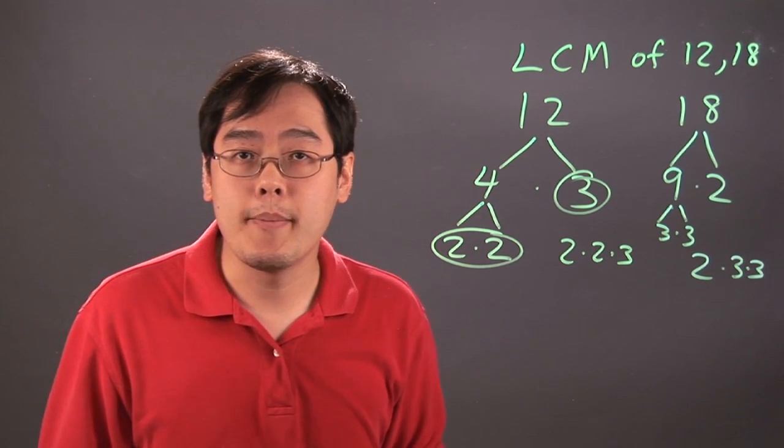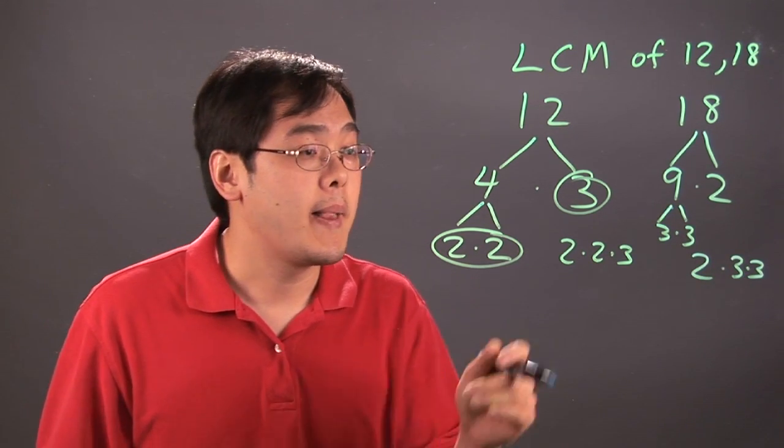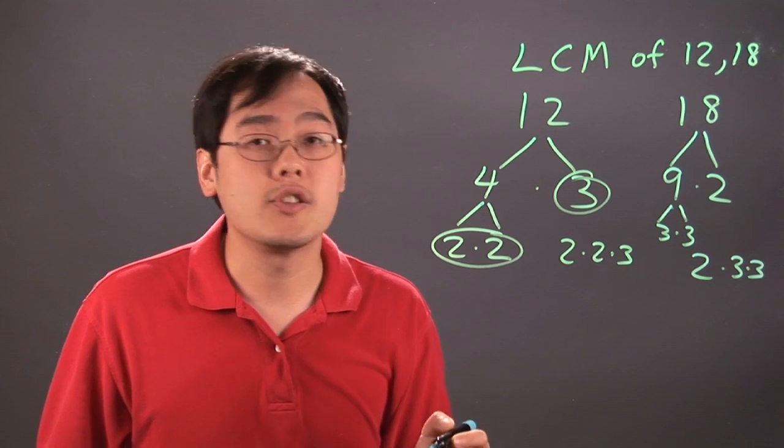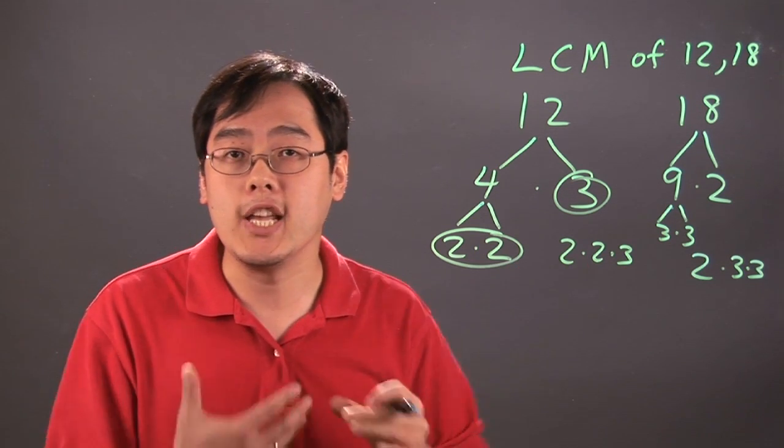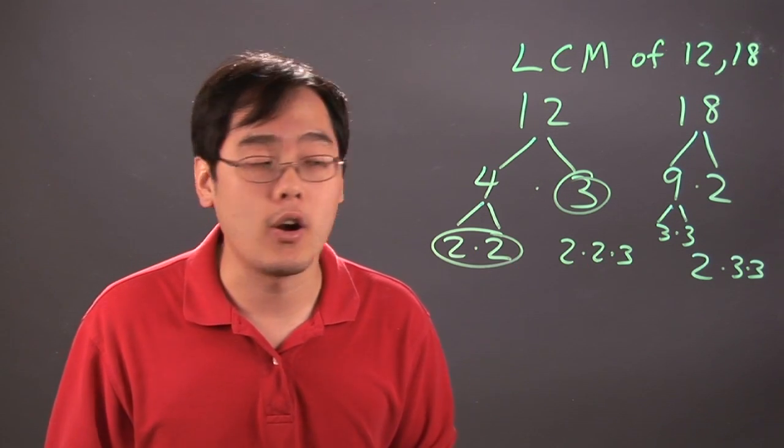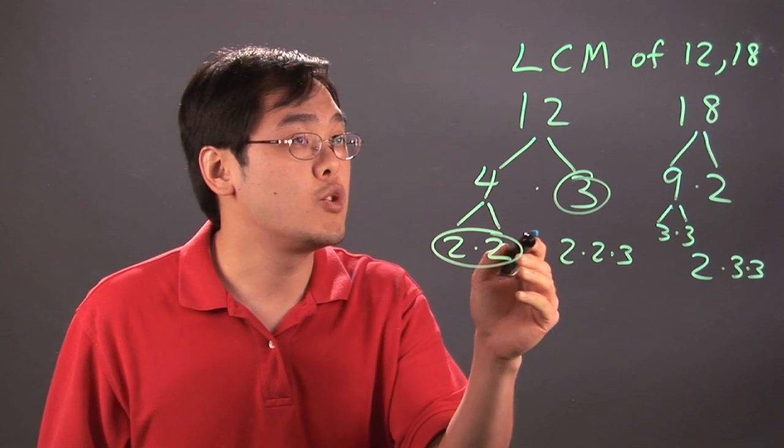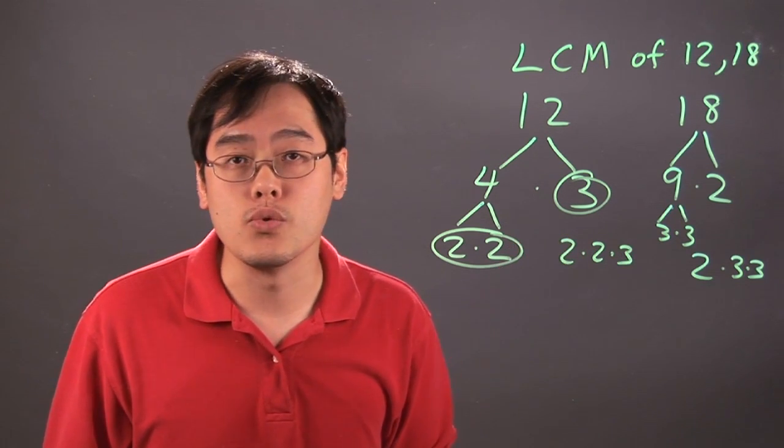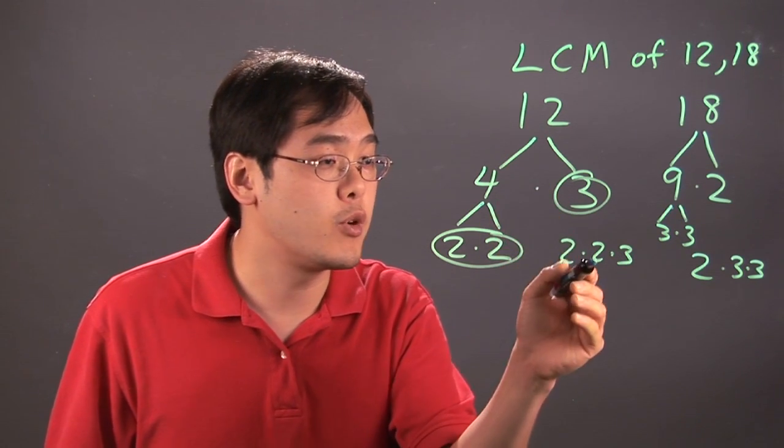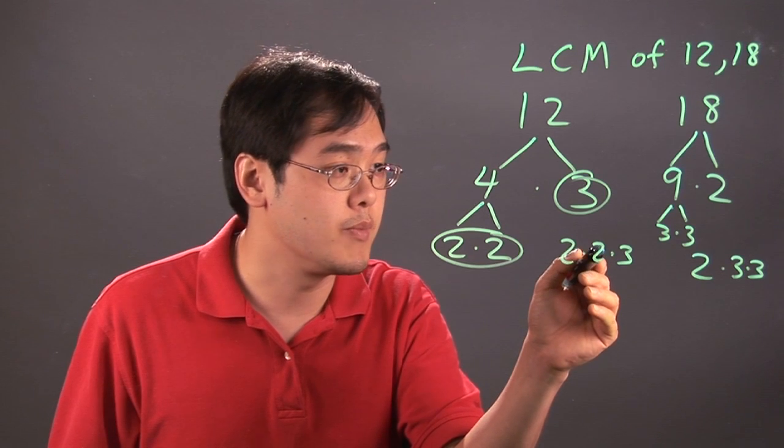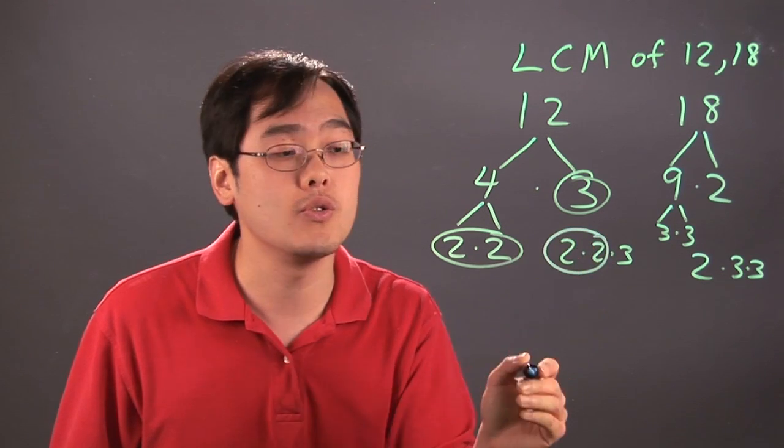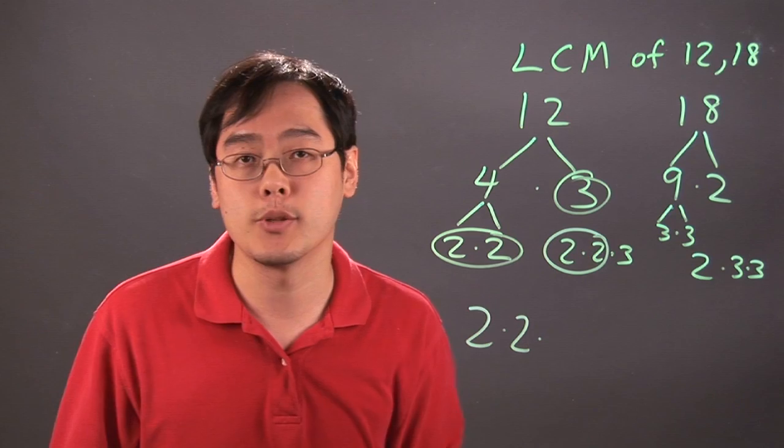Now when it comes to finding the least common multiple, what you want to think about is look at the number of factors and see which number has the most of each number and circle it from there. So for example, between 12 and 18, who has the most 2s? As you can tell, the 12 has more 2s and it's got 2 of them. So you're going to circle those 2 2s. That's going to be part of your least common multiple.